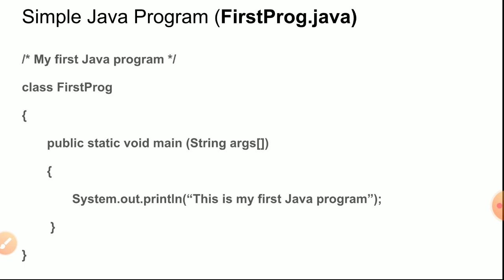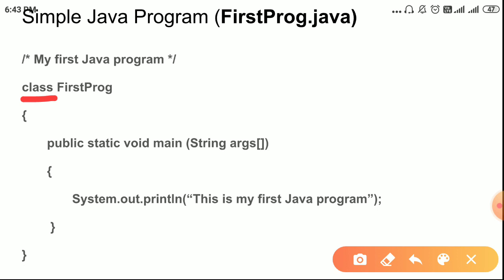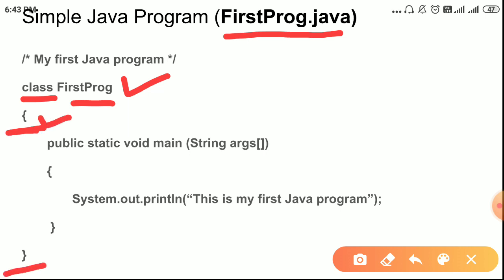Here we have the keyword 'class', and 'FirstProc' is the class name. The class name and file name should be the same — so the file name is 'FirstProc.java' and the class name is 'FirstProc'. You use curly braces for the class body — this is the opening and this is the ending point.